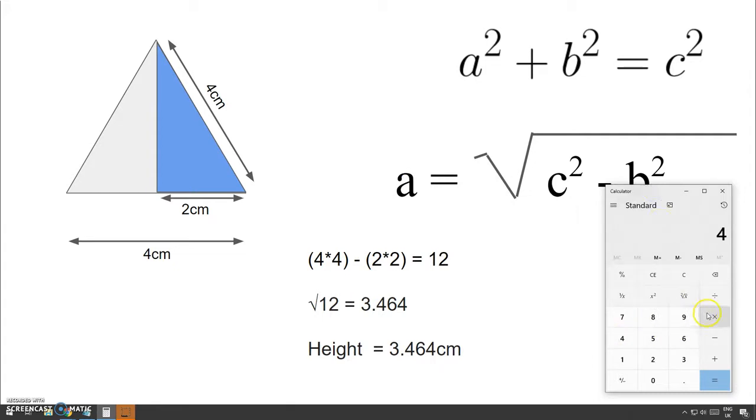So, let's do 4 times 4 just to show you. 16. Good. So, that's 16. 2 times 2 is 4, which is that one, 4, which 16 minus 4 is 12. Good. And then we need the square root of 12. So, we just type 12 and hit the square root button. And it gives us this crazy number here. So, the height of one of them there is 3.464 centimetres.